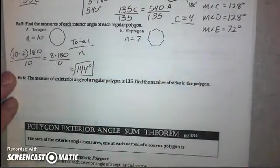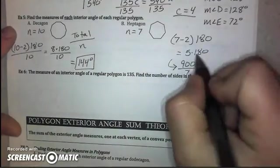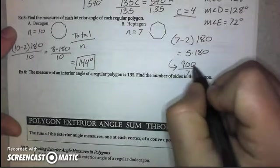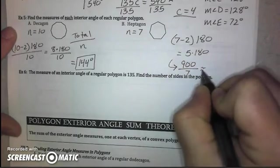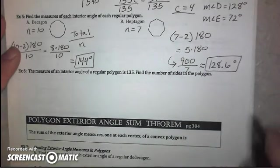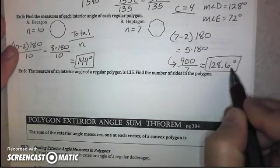And we're going to do the same thing on part B. So, when we do this with seven sides, we get a total of 900, which when we divide by 7 gives us about 128.6 degrees when we round.